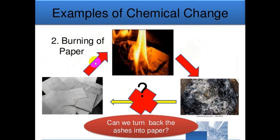This is the paper. When you start to burn it, a new substance is formed, which is ash. But the question here, can you return this ash back to be paper? The answer is no, because in chemical changes the substance which is formed cannot change back to be the original one.